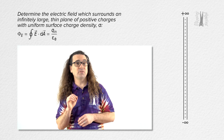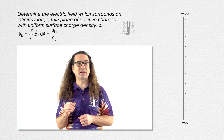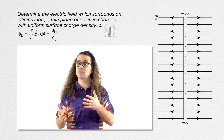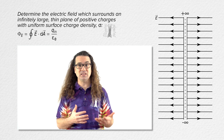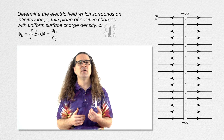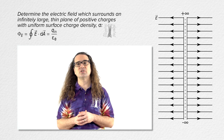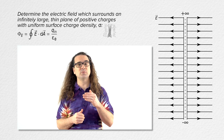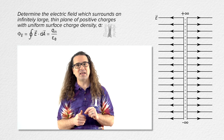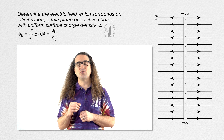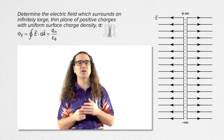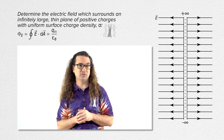First off, we know the electric field will be normal to and directed away from the infinite plane of positive charges. This is because the plane is infinitely large; therefore every component of the electric field dE which is parallel to the plane of charges and is caused by infinitesimally small charged pieces of the plane dQ will cancel out, leaving only electric field components of dE which are perpendicular to the plane and directed away from the plane of charges.